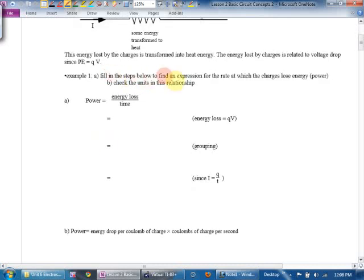It says, fill in the steps below to find an expression for the rate at which the charges lose energy and check the units. So power, which is the rate at which work is done, or in this case, the rate at which the charges lose energy, power is how much watts this particular electric device requires. Power we defined as energy loss or work over time. Remember that from unit 3? So that means power is going to be QV over time. So far, so good?